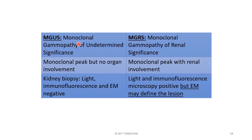Monoclonal gammopathy may occur in two forms. There may be no organ involvement, in which case kidney biopsy by light, immunofluorescence, and EM is free of lesions — known as monoclonal gammopathy of undetermined significance (MGUS). Whereas if renal involvement occurs in a case of monoclonal gammopathy, light and immunofluorescence microscopy may provide a diagnosis, but electron microscopy actually defines the lesion — what type of lesion is present.